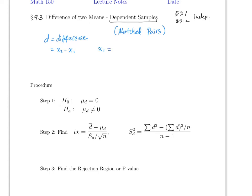Here x1 is the before and x2 is the after. For example, somebody claims a new medicine makes you happier — you test people with a regular medicine and then the new medicine to see if they are happier after. The claim is mu_D equals zero, where D refers to the difference, and if D equals zero that means the before and the after are the same.